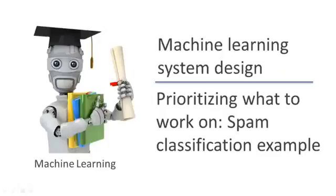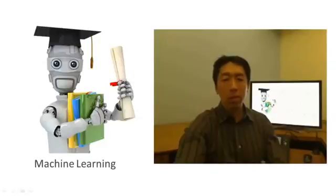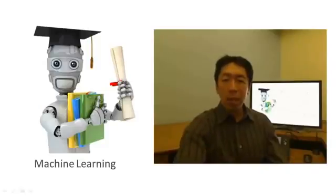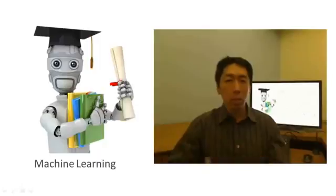In the next few videos, I'd like to talk about machine learning system design. These videos will touch on the main issues you may face when designing a complex machine learning system, and I'd like to give advice on how to strategize putting together such a system. Even though these videos may seem somewhat less mathematical, this material may turn out to be very useful and potentially a huge time saver. Concretely, I'd like to begin with the issue of prioritizing how to spend your time, and I'll begin with an example on spam classification.